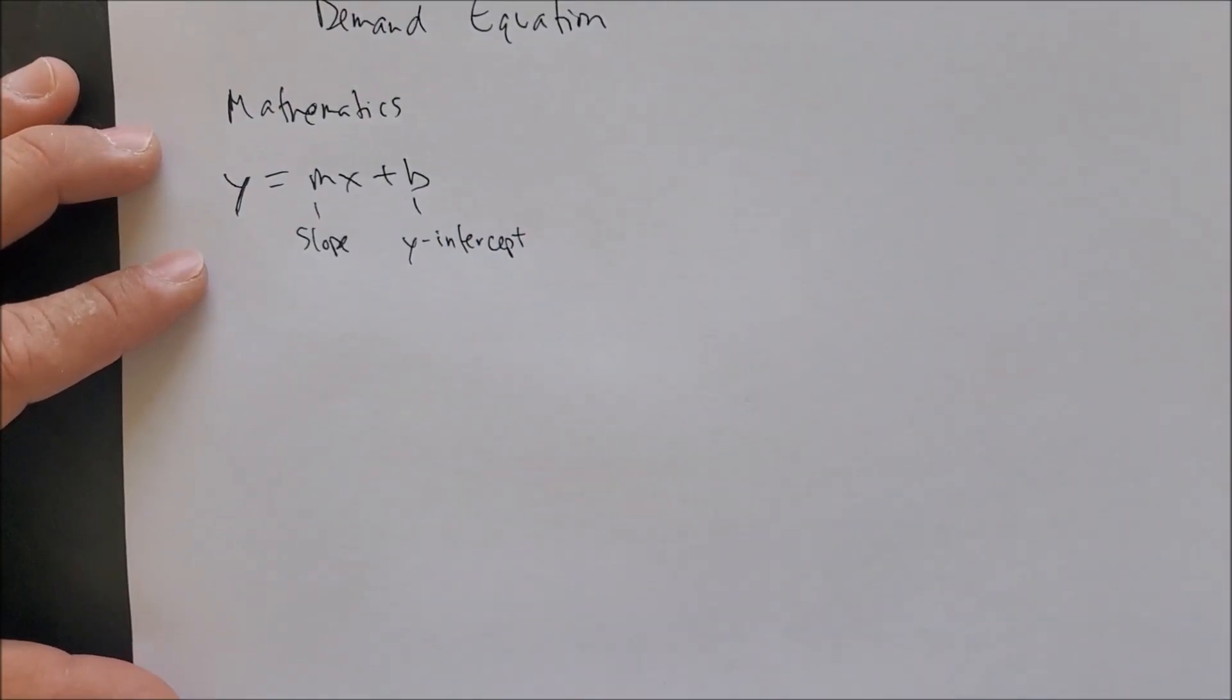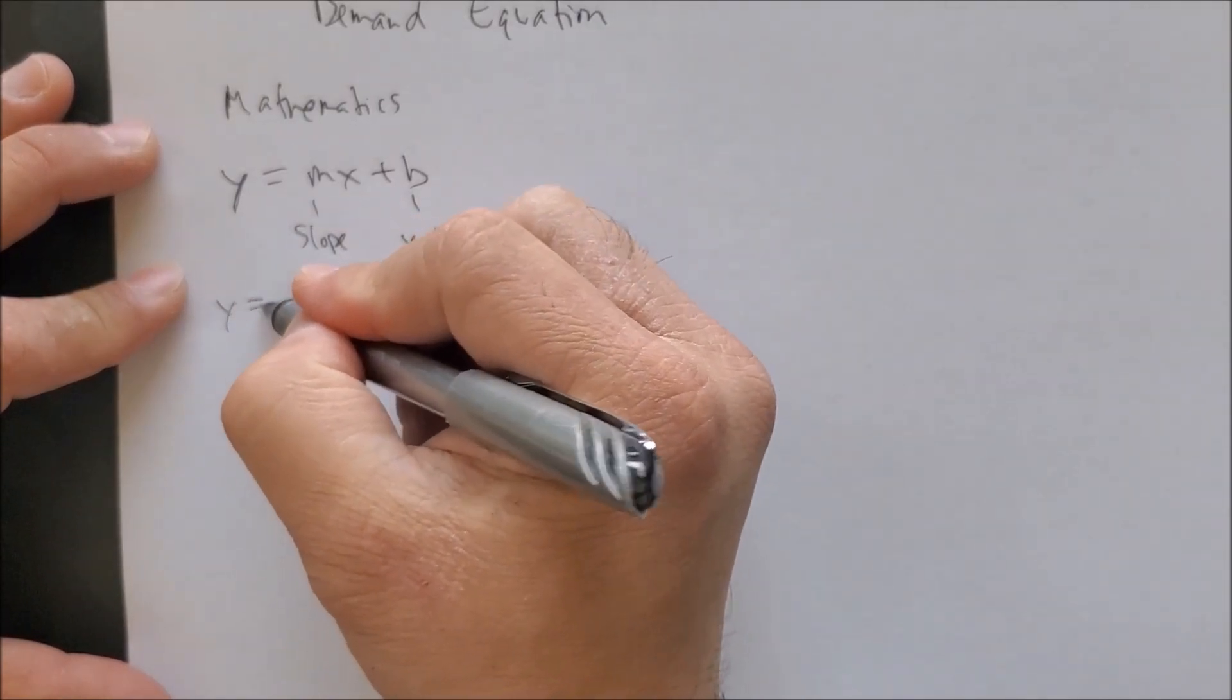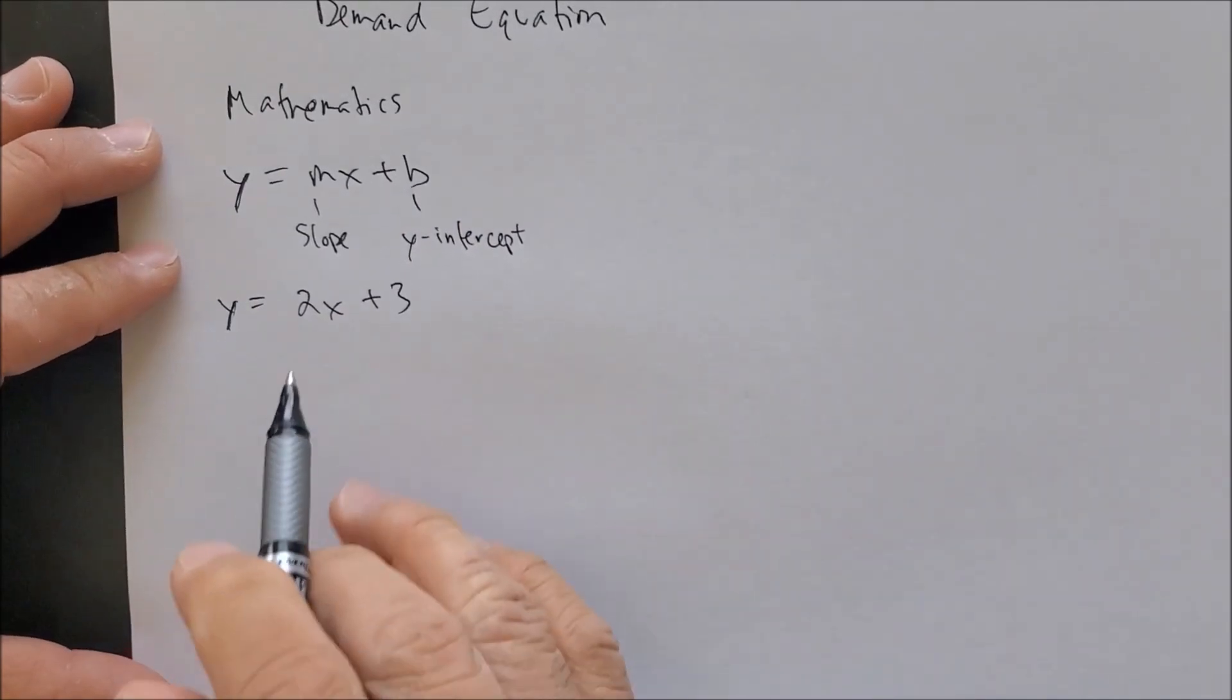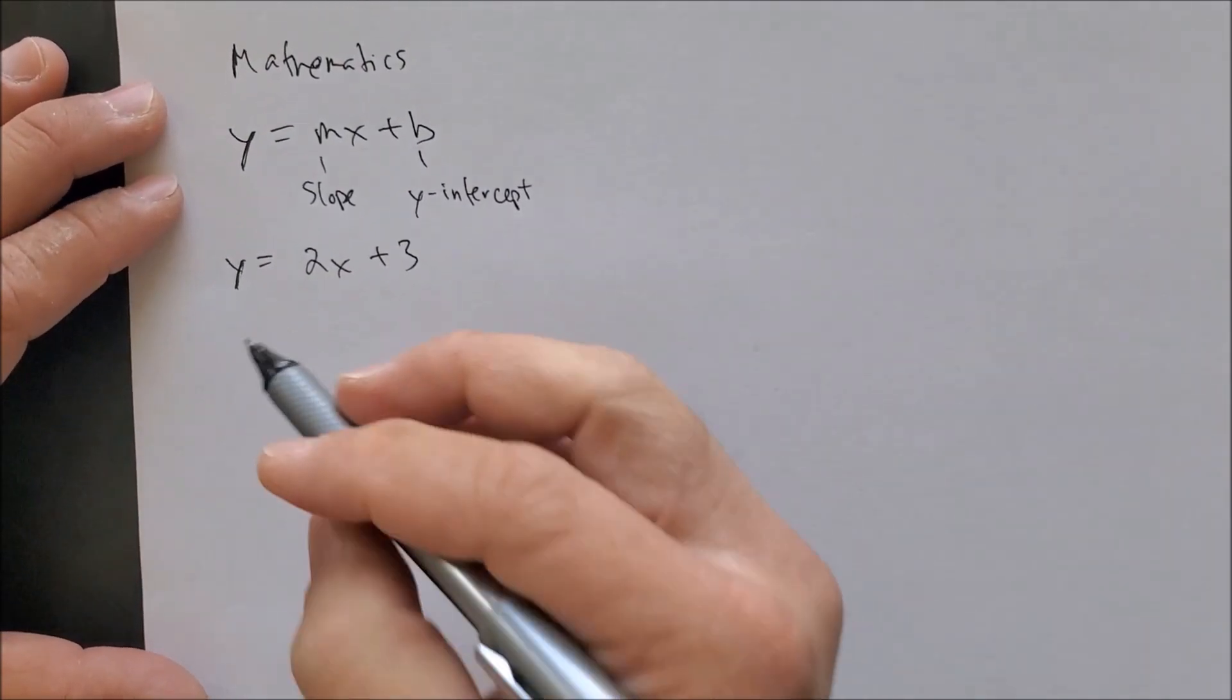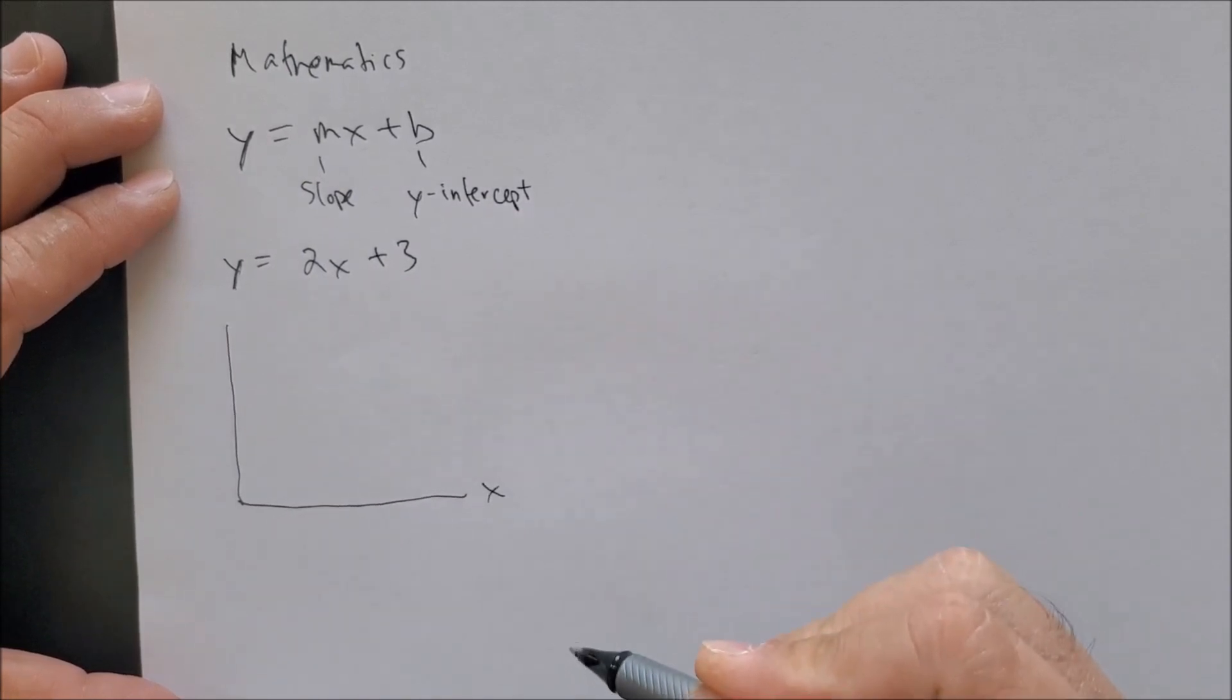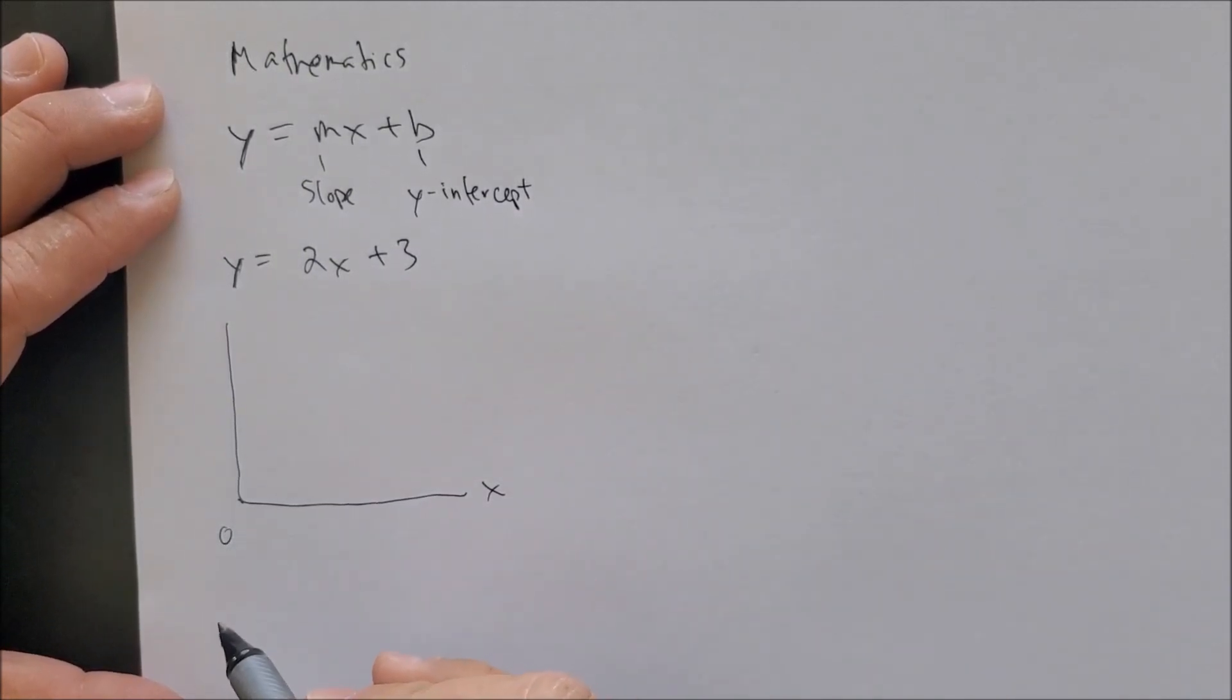So if we were to put some numbers, let's say y equals 2x plus 3, we could then graph this as such, where we have the x-axis, zero our point of origin,